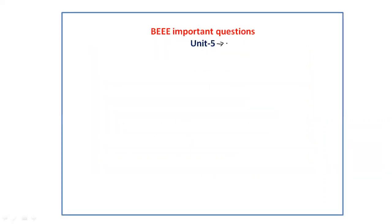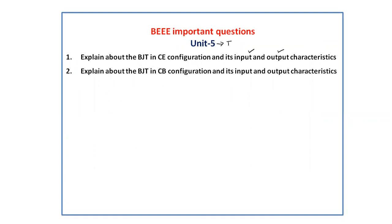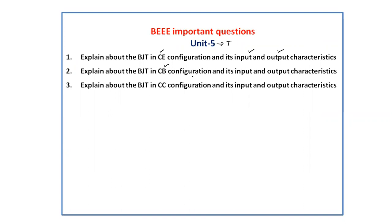Unit 5 is related to transistors. Explain about the BJT in common emitter configuration with its input and output characteristics — draw the circuit diagram and explain each component and the characteristics. Also explain the BJT in common base configuration and in common collector configuration with their input and output characteristics. Then compare all three configurations.